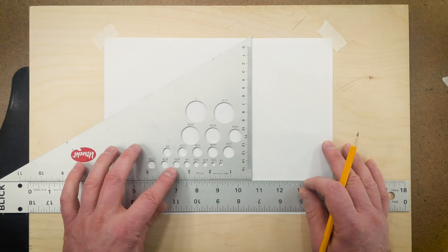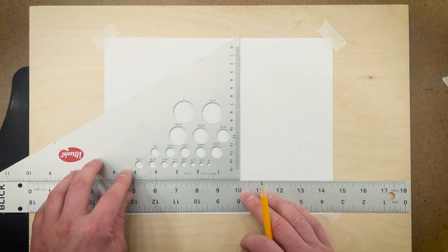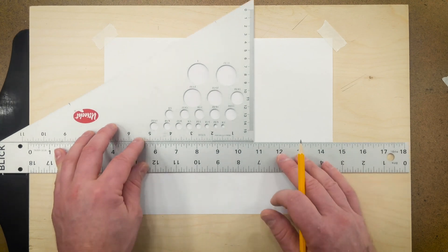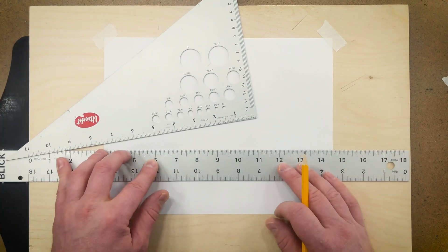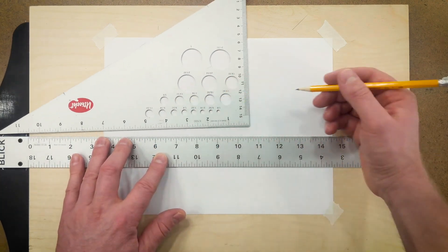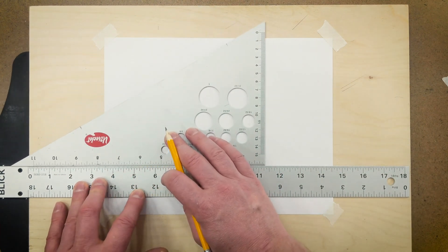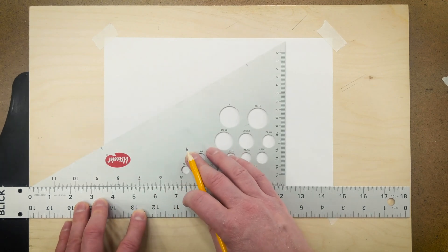In order to draw an isometric cube, we need to learn how to use our t-square and triangle. The t-square can slide up and down on the drawing board, allowing us to draw parallel lines wherever we want. We can then slide a triangle to be able to draw vertical or perpendicular lines anywhere on the page.